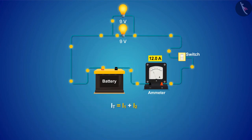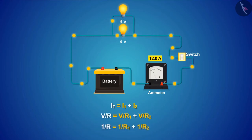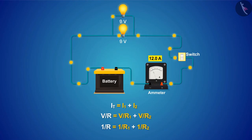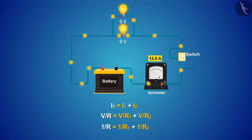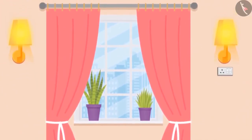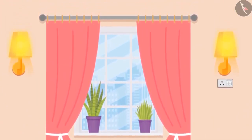If we add the values of the individual currents, it will be equal to the equivalent current in the circuit. By applying Ohm's law, since the potential difference is the same across the circuit, we get the relation among resistances in a parallel circuit. If the number of resistors is increased, they continue to be added to the equation in the same fashion.